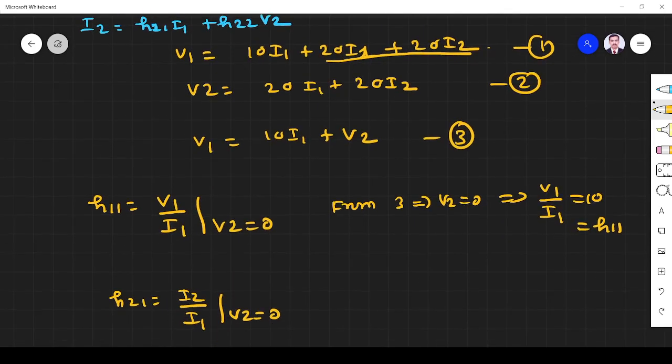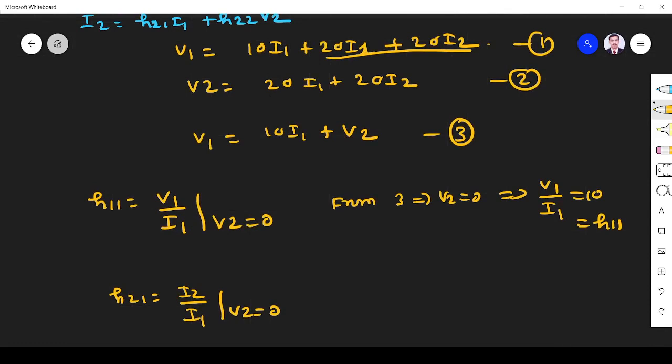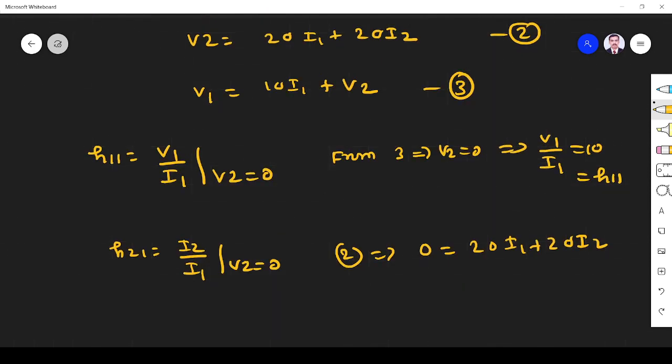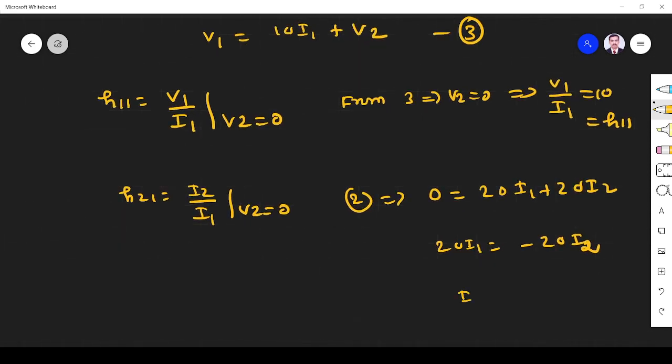So v2 must be equal to zero and I have to relate i2 by i1. When you go to equation number 2, if v2 is zero, the left hand side equals 20 i1 plus 20 i2. What I need is i2 by i1. So 20 i1 equals minus 20 i2, which means i2 by i1 is minus 1. So h21 equals minus 1.